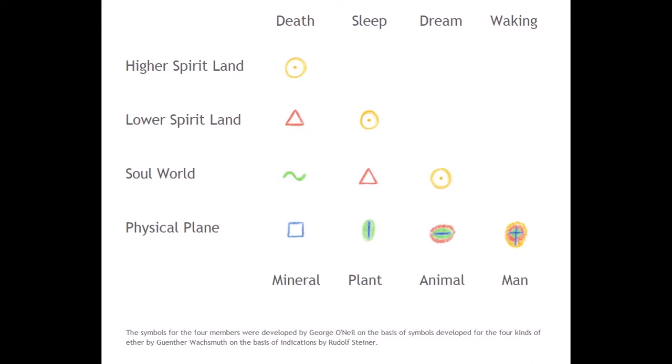All of them have physical bodies, here symbolized in blue. Ether bodies, here green. Astral bodies, here red. And the I, here yellow.